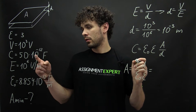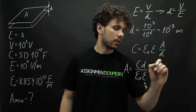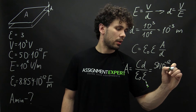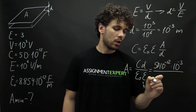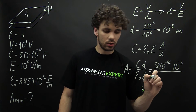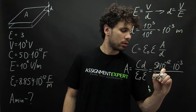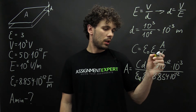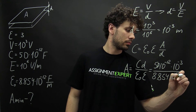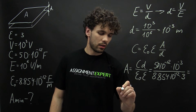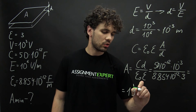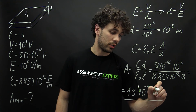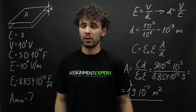So we have 50 times 10 raised to the negative 12, times 10 raised to the negative 12, times 3. And this gives us 19 times 10 raised to the negative 4 meters squared. So here is the area of the plates of such a capacitor.